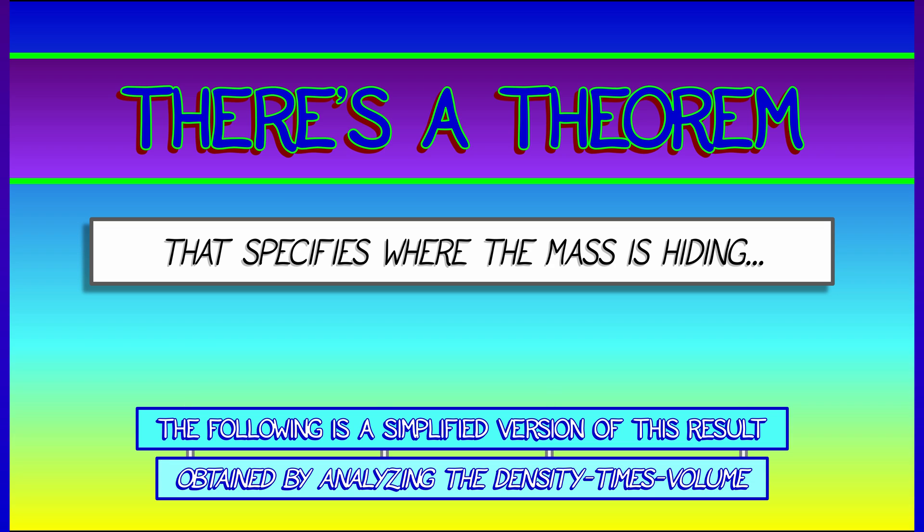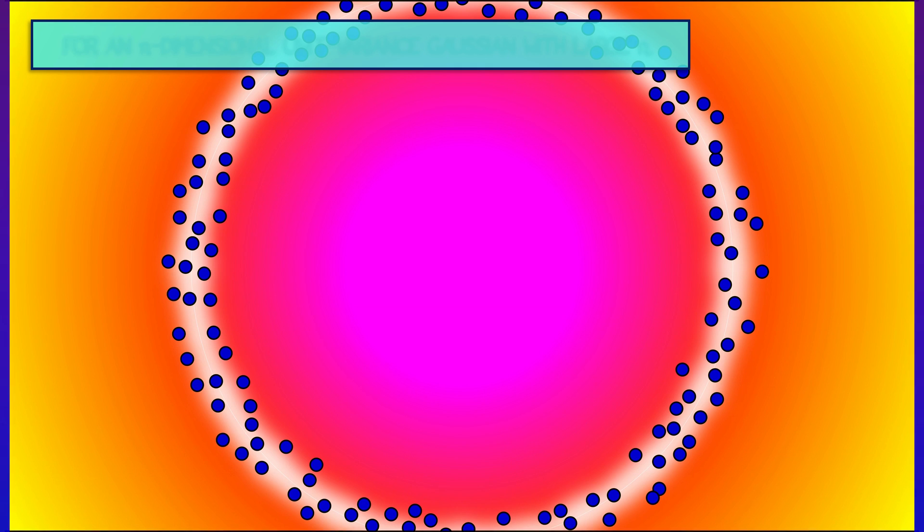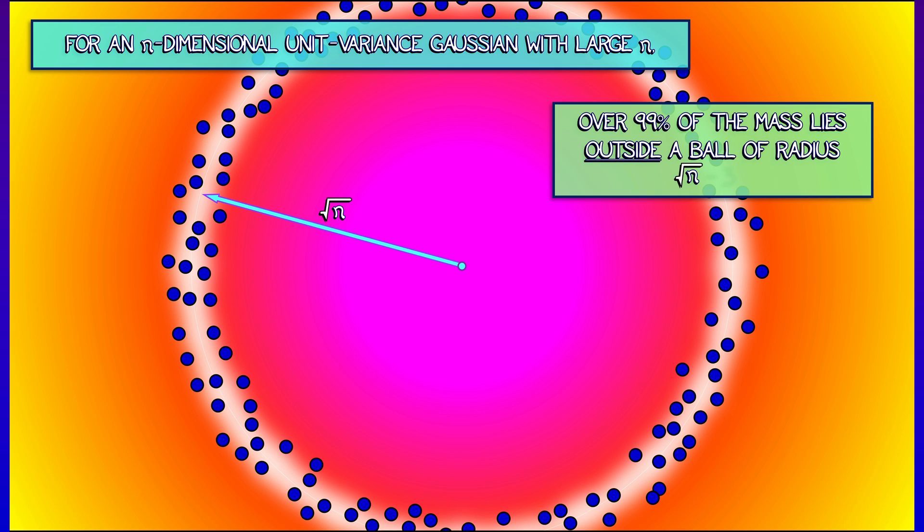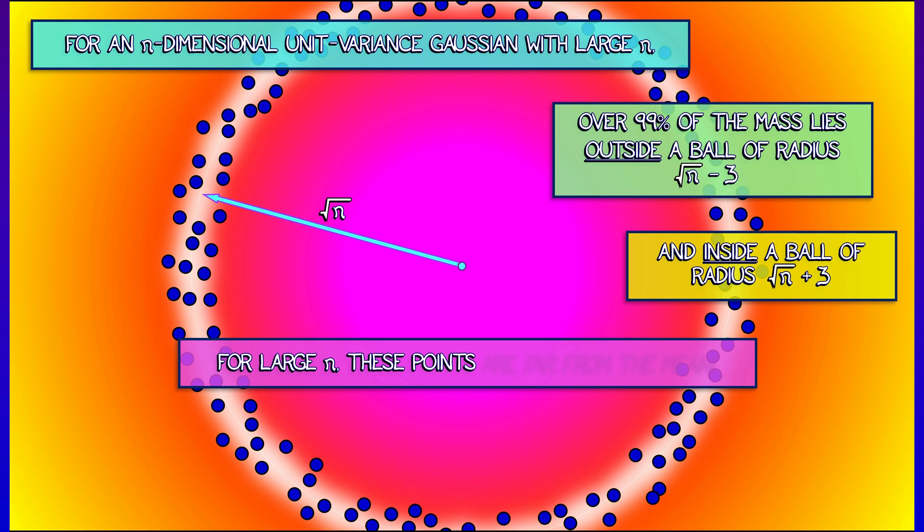And what the theorem says is that for an n-dimensional unit variance Gaussian with large n, most of the mass, over 99% of the mass, lies outside a ball of radius square root of n minus three, and inside a ball of radius square root of n plus three. So for large n, these points are very far from the mean. They are focused about a sphere of radius square root of n.